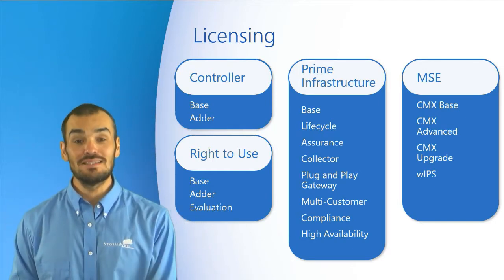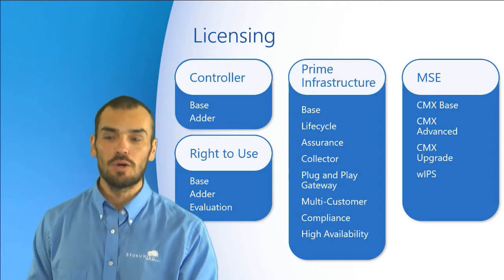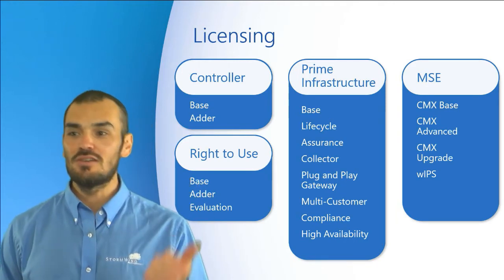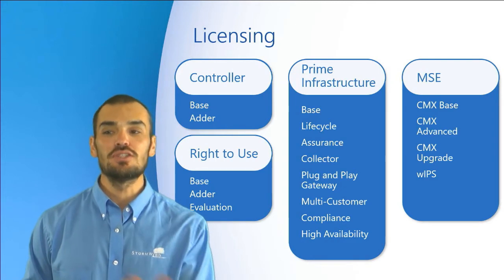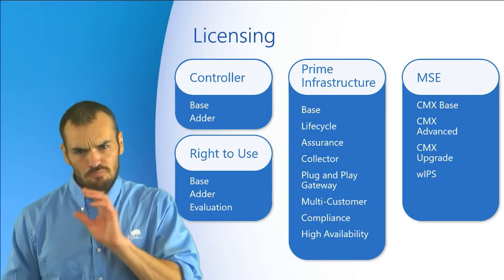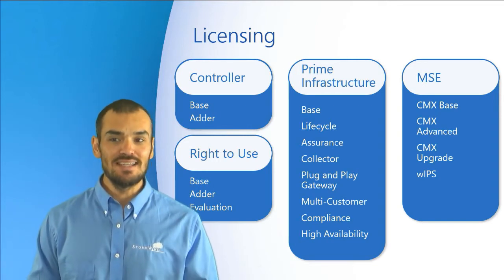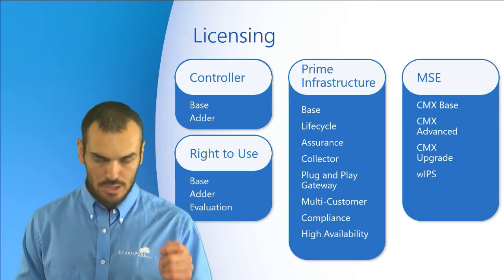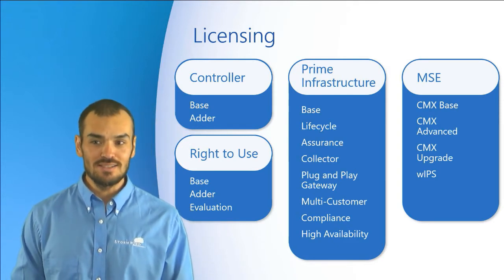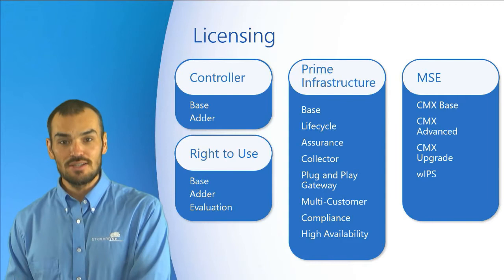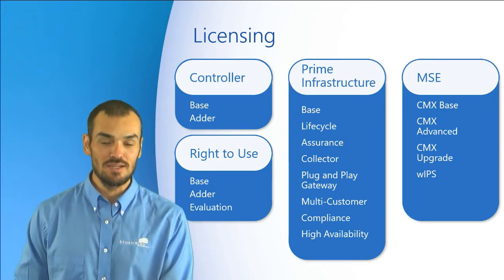Finally, we have the Right-to-Use license, which is offered with newer products — specifically the controllers: the 3850 series, the 3650, the 5760, the Flex 7500 series, and the 8500 series can all take advantage of this license. Cisco changed a number of things here: licenses are no longer tied to a unique device identifier, the UDI — not tied to a product ID, not even tied to a serial number anymore. This now allows enabling of desired access point licenses after the end user license agreement is accepted.